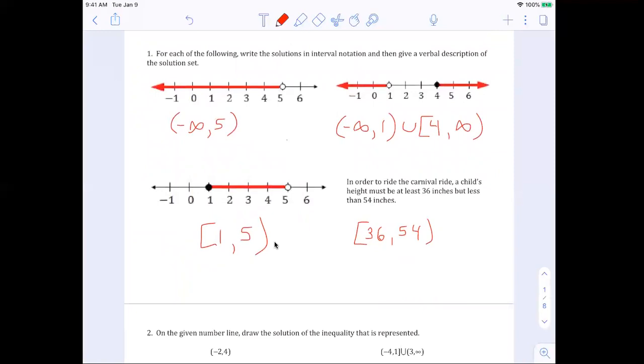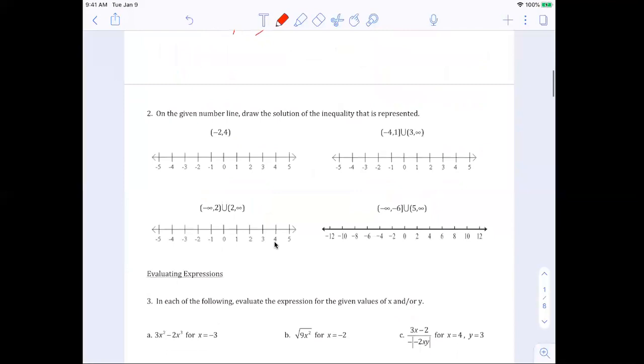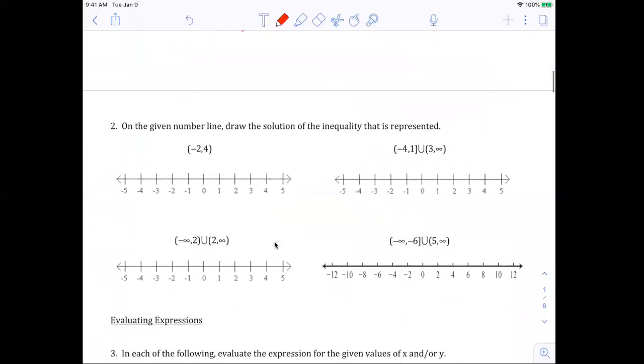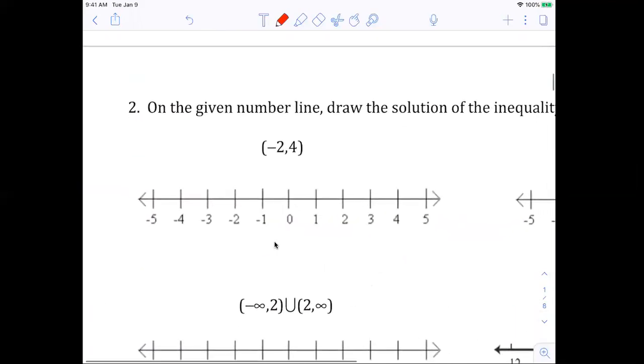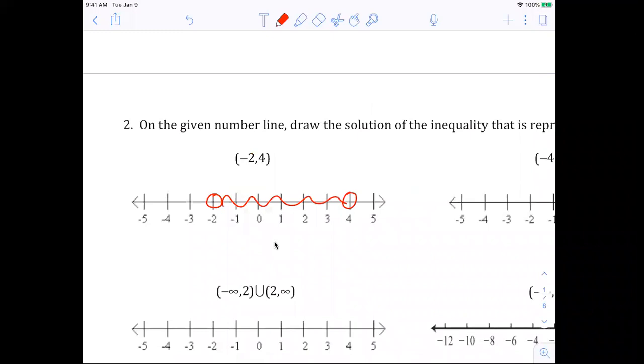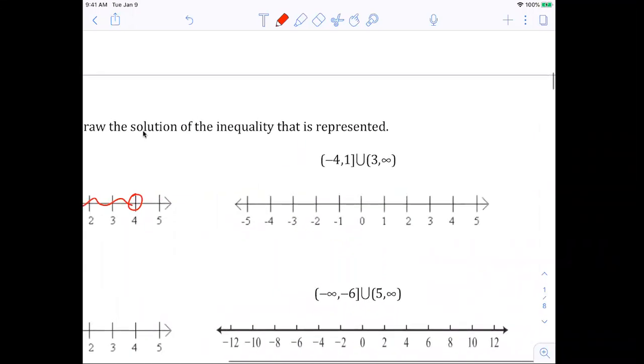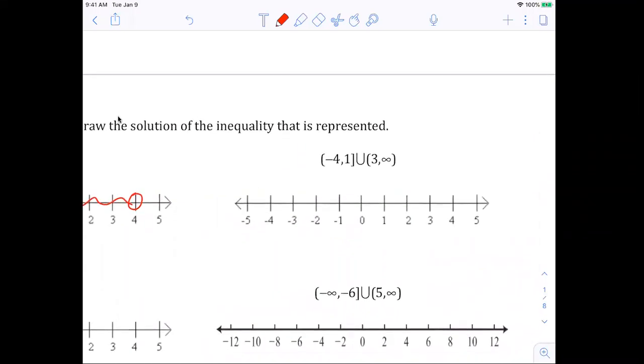Moving on. And again, just ask any questions that you might have. So now we want to go the other way with it. Now we're given an interval notation and we want to show that graphically. So this means from negative two exclusive to four exclusive. So that is going to be everything from negative two open circle to positive four open circle. Open circle means those numbers are excluded from our solution set.